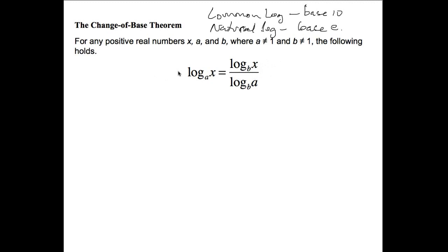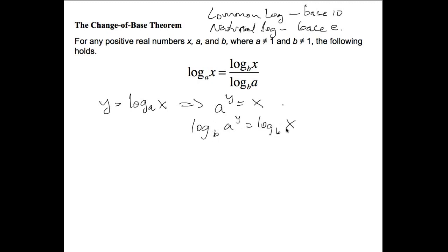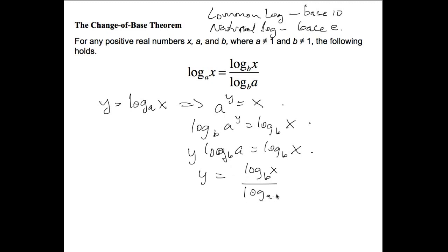It's not too hard to prove. Suppose y = log base A of x. In exponential form this says A^y = x. Taking log base B of both sides and using properties of logarithms: y · log_B(A) = log_B(x), so y = log_B(x) / log_B(A). Since y was log base A of x, we get: log_A(x) = log_B(x) / log_B(A). To change the base, take the log in the new base of x and divide by the log in the new base of the original base.